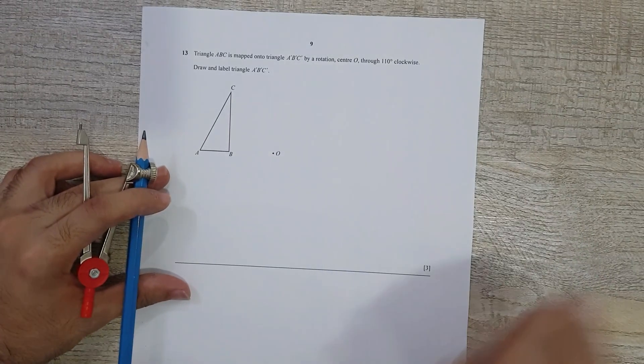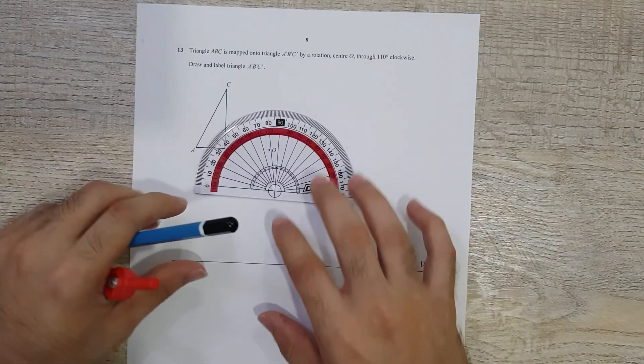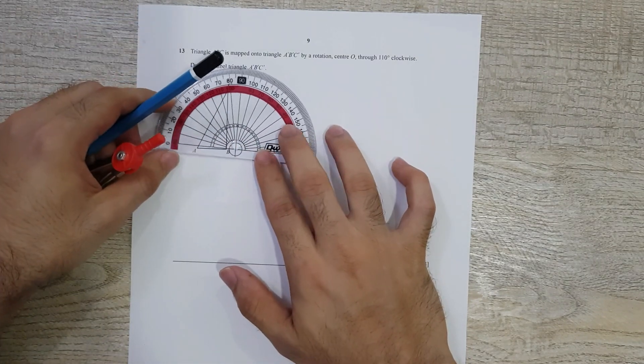That means by the time you're done, this triangle is going to end up somewhere over here. But the question is how exactly do we do that? You're going to need a protractor and of course a compass and a scale.